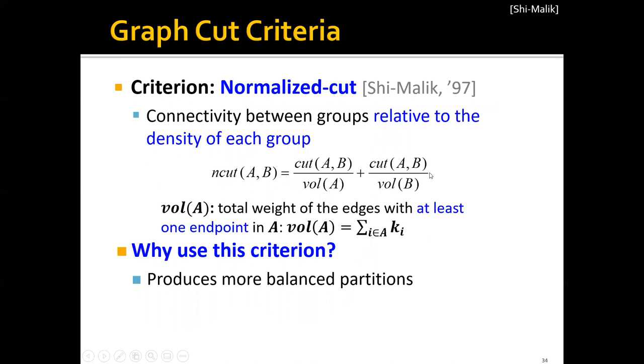To address this problem, we need a normalized cut. Normalized cut is another criterion which measures the connectivity between groups relative to the density of each group.